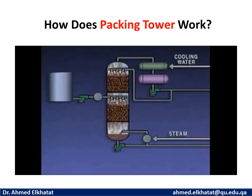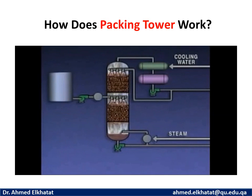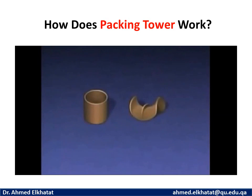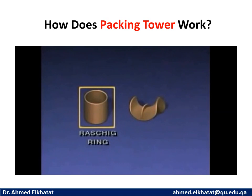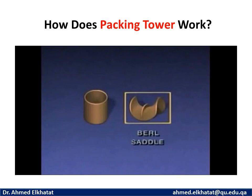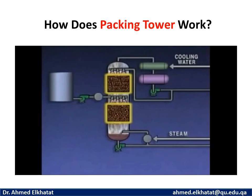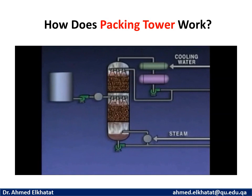Another type of tower, called a packed tower, contains layers of devices called packing instead of trays with bubble caps. There are many different types of packing. Some towers have sections filled with cylindrical rings known as Raschig rings. Another type of packing is known as a Berl saddle. The packing breaks up the liquid so that it flows over a large amount of surface area, exposing more of the liquid to the vapors and increasing heat transfer. Packing can be made from many different materials, including porcelain, copper, aluminum, and iron. The main requirement is that the material must be compatible with the liquid in the tower and the operating conditions.